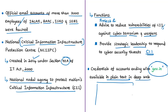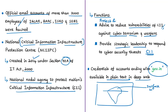There are three layers of the web: the surface web, consisting of information searchable by regular browsers using Google, Bing, or Yahoo; the deep web, which contains information invisible to search engines such as personal email content, social media account content, online banking details, private company databases, scientific and academic databases, medical records, and legal documents; and the dark web.